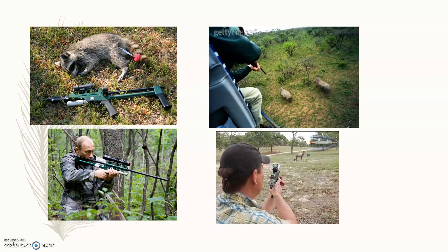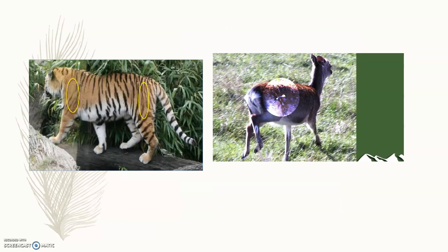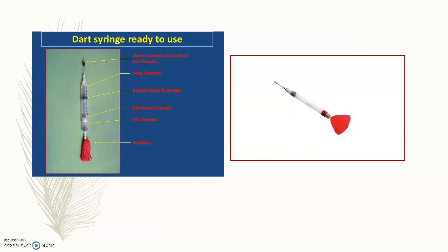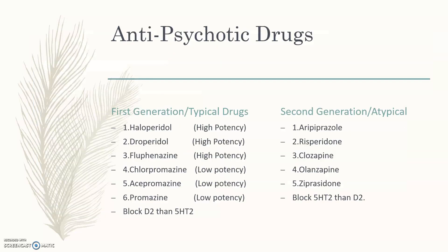These are darting images — this is Russian president Vladimir Putin attending a darting camp. These are darting sites with wild animals. These are dart syringes ready to use in darting, and these are the guns. So, antipsychotic drugs: first generation drugs are typical, and second generation are atypical drugs.